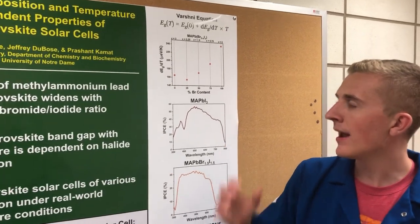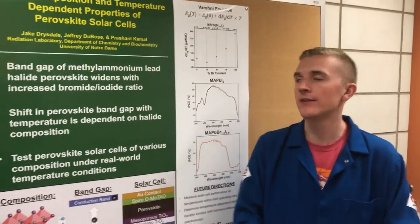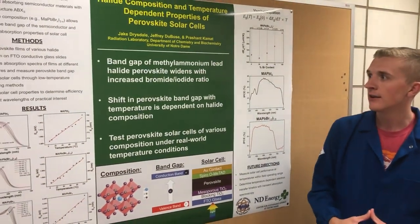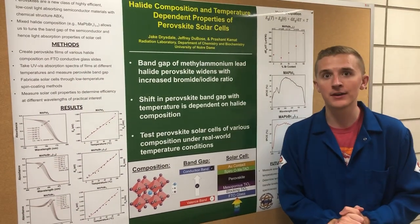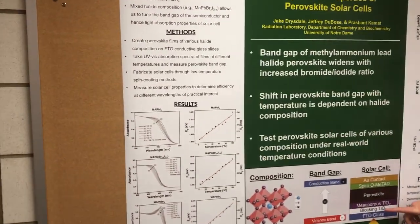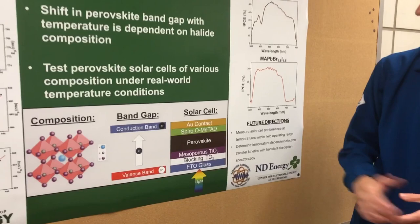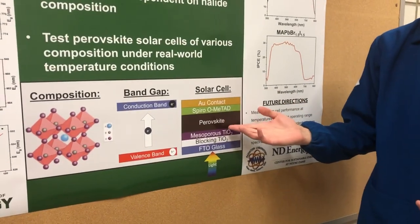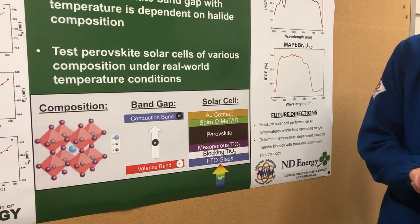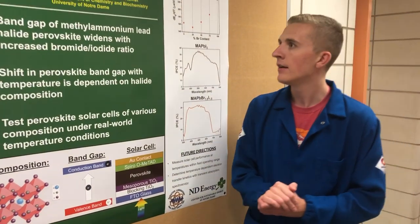Now we want to understand what impact this has on the performance of our actual perovskite solar cells. We fabricated these perovskite solar cells using a low temperature technique where we spin coat the different layers of our perovskite solar cell, where perovskite is our light absorbing layer, and the other layers help to separate and collect the charges to run through a circuit and generate power.